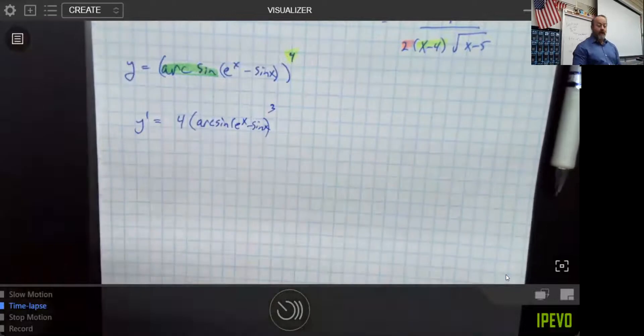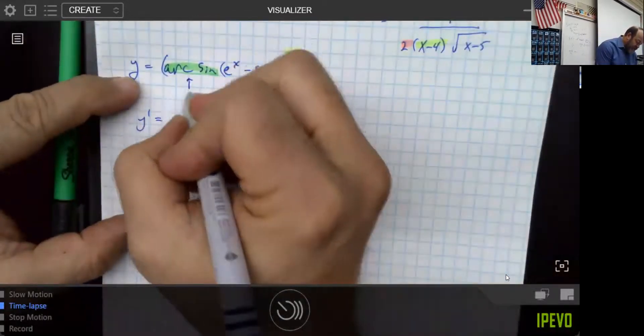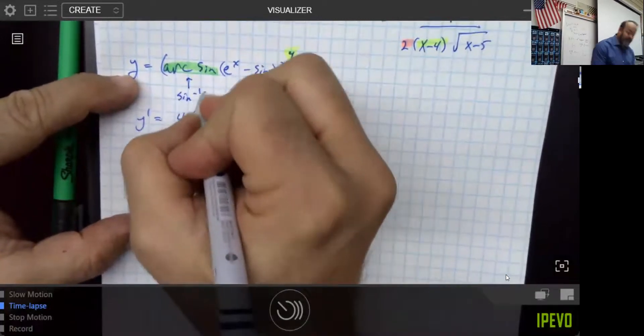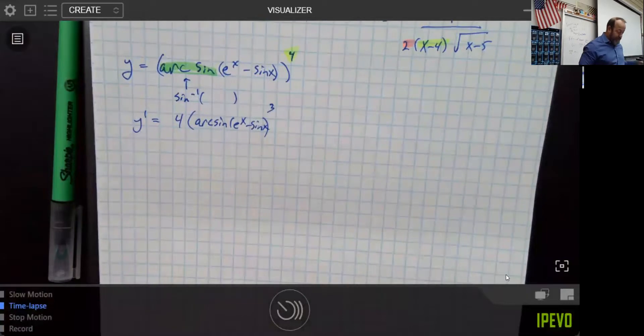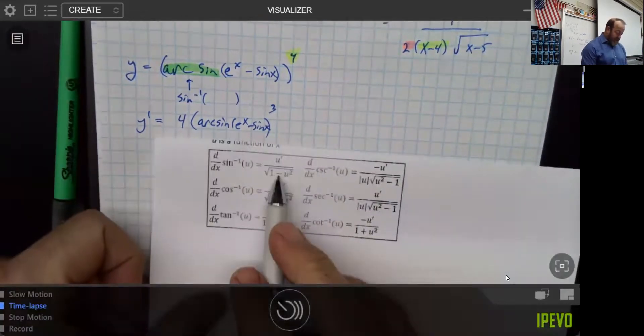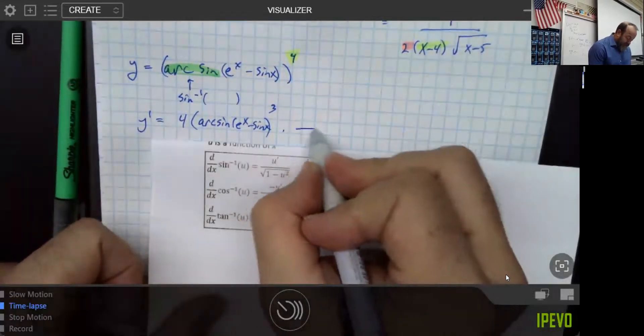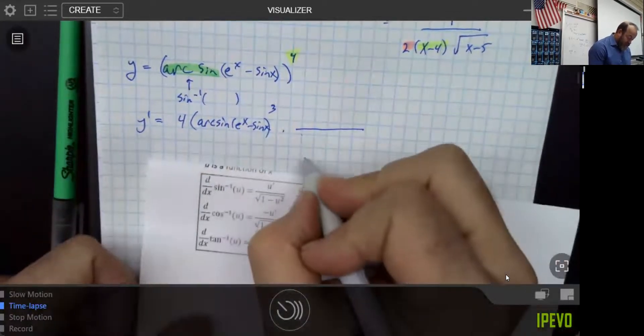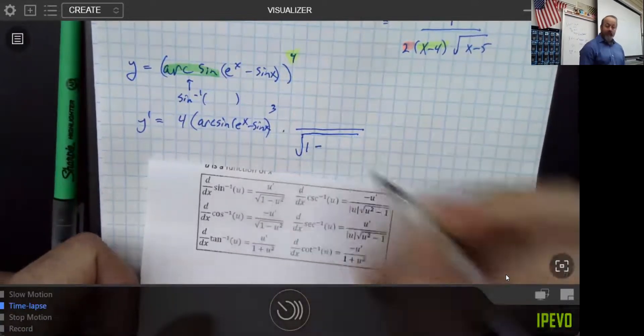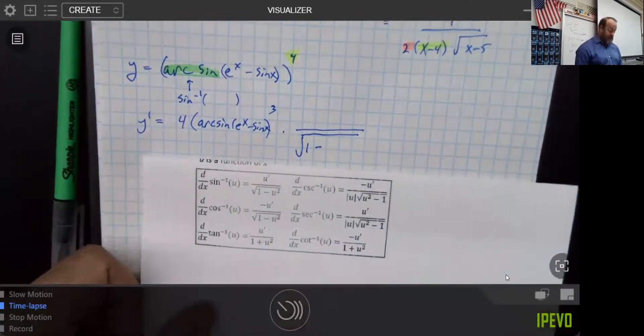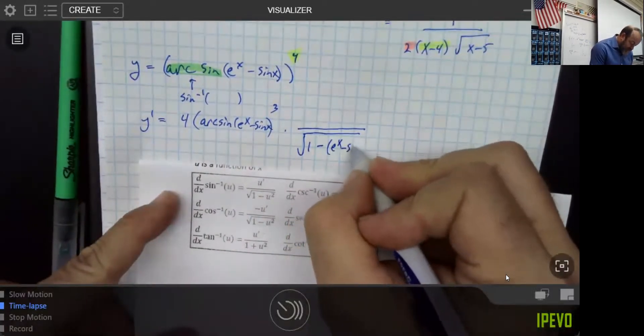Keep in mind, when you deal with an arc sine, that's the same thing as saying sine with a little minus one. So, that's just different verbiage for the same thing. Now, the arc sine I have right here, we're going to be multiplying this by one over the square root of one minus whatever your u is that has been squared. And my u is e to the x minus sine x.